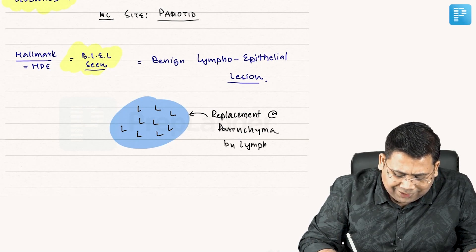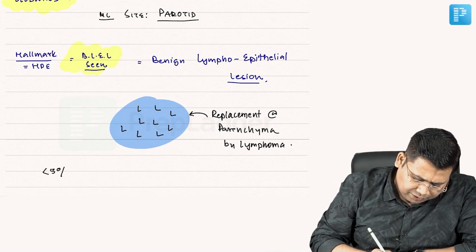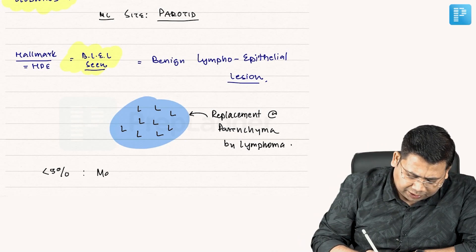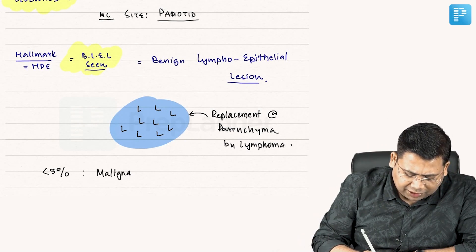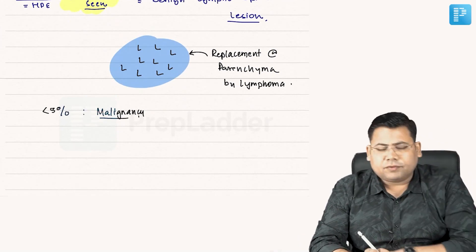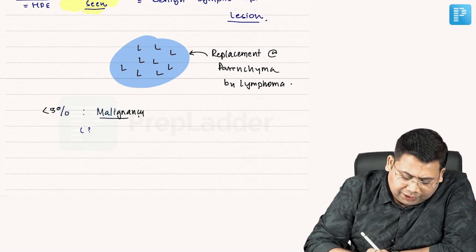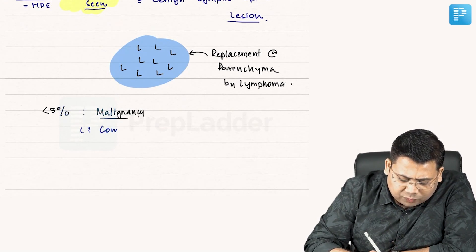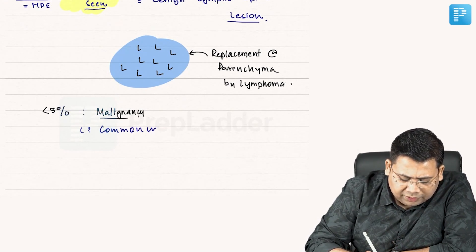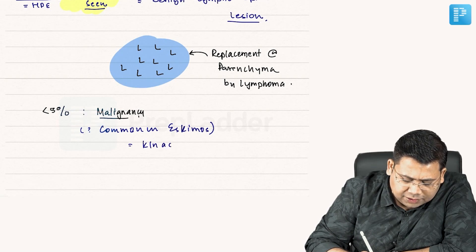In less than 5% of cases, they can be malignant. One more thing to know is that this tumor is common in Eskimos, and therefore they are also known as Eskimomas.